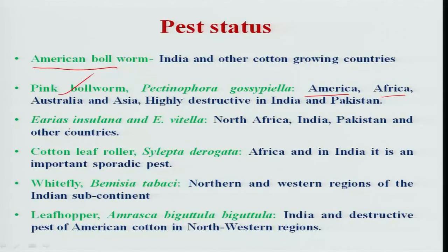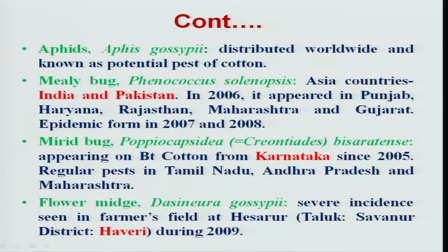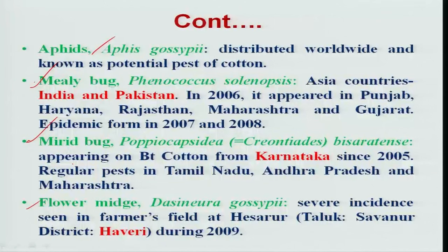The spiny bollworm is another important pest occurring throughout North Africa, India, Pakistan, and other countries. Other important pests include cotton leaf roller, whitefly, leafhopper, and aphids. In some parts of the country, mealy bug and flower midge have recently occurred and are considered emerging pests on BT cotton.